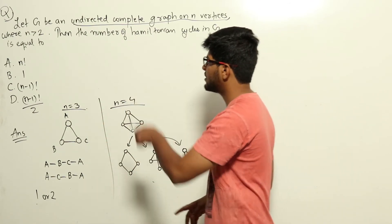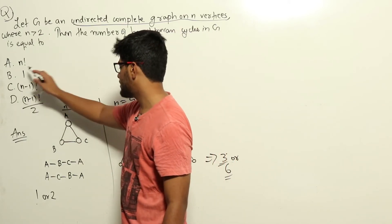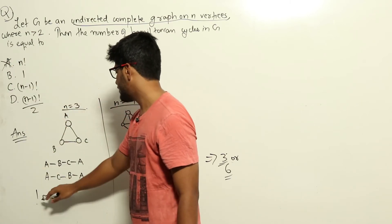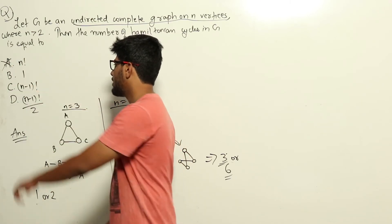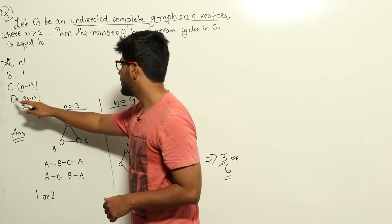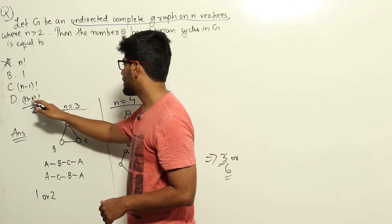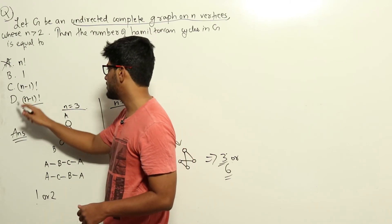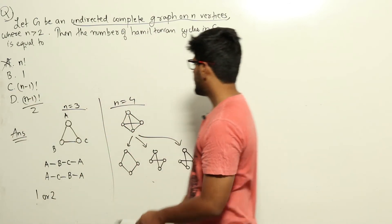Looking at the options for n=3: option A gives n! = 3! = 6, which is neither one nor two, so it's wrong. Option B gives 1. Option C gives (n-1)! / 2 = 2!/2 = 1. Option D gives (n-1)!/2 = 1. So options B, C, and D all satisfy the n=3 case.